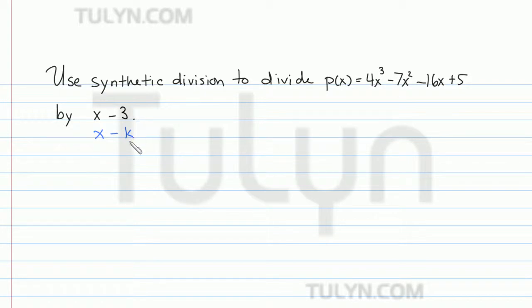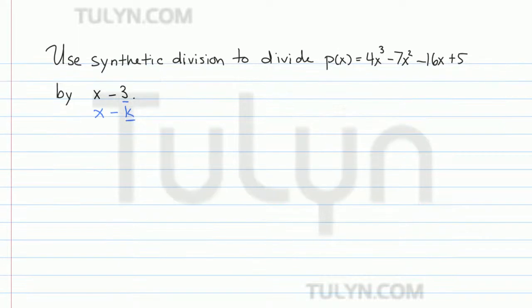Our synthetic divisor in this case is going to be our k, which is 3. So when we set up our synthetic division table, we want to put the synthetic divisor, 3, over here in a box to the left.